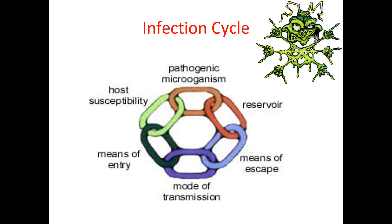Now let's talk about the infection cycle, which includes six essential links. Breaking any one of these links can stop the spread of infection. The first is the pathogenic microorganism — the germs such as bacteria or viruses that cause the infection. For phlebotomists, it's critical to recognize these as potential risks. The second is the reservoir, which is where the pathogen lives and multiplies, such as in humans, animals, or on contaminated surfaces. The third is the means of escape — how the pathogen leaves the reservoir, often through bodily fluids like blood or saliva.